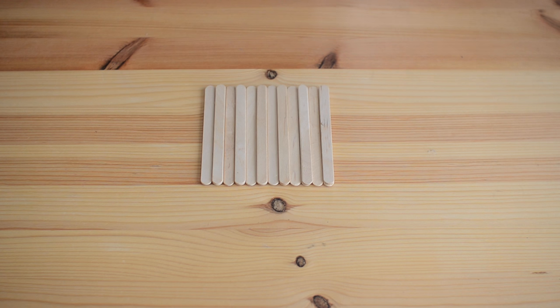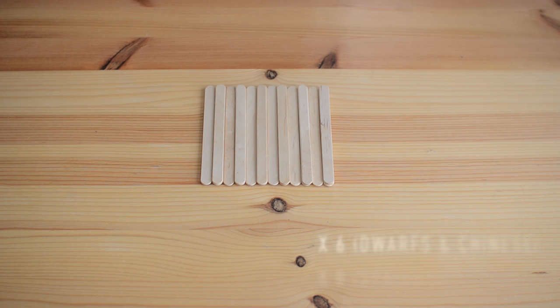You'll want to repeat these steps until you make a total of six panels, if you're making it for dwarf or Chinese hamsters, and eight panels if you're making it for Syrians.